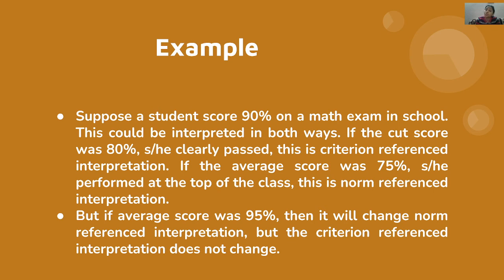For example, if a student scored 75% on an examination, that is a Norm Referenced interpretation when the average score of the class was 95% — that student was below average performance. But in Criteria Referenced interpretation, if the cut score is 85%, then scoring 75% means the student did not pass the criteria.